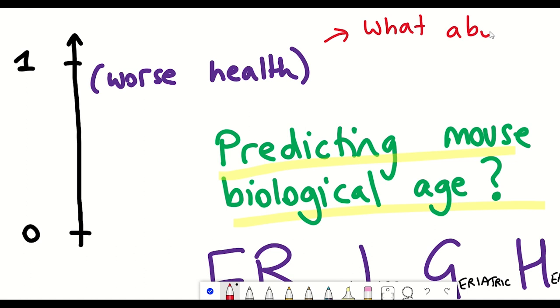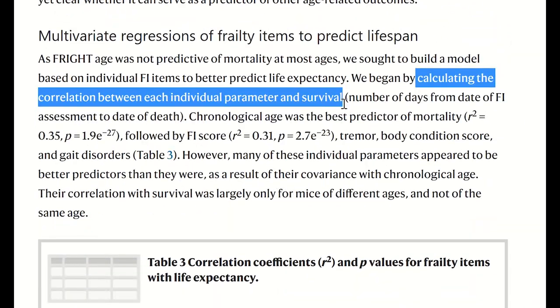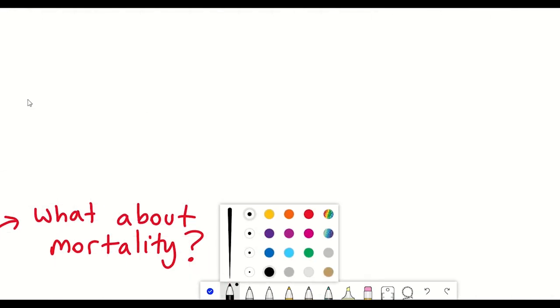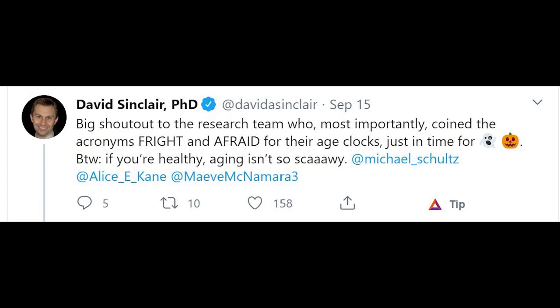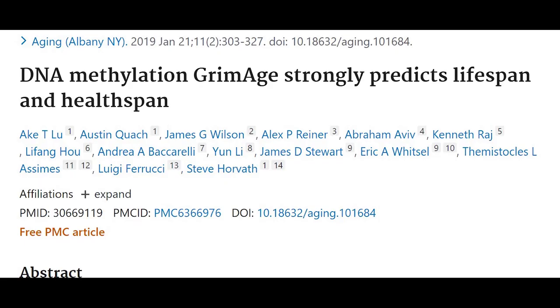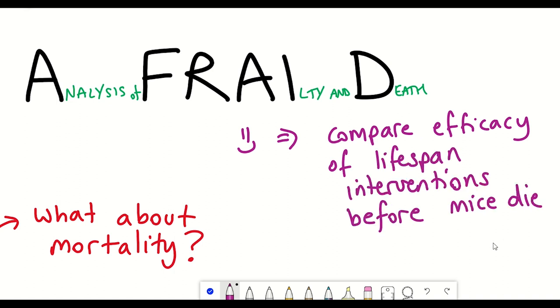So to develop a clock that can predict lifespan, the authors decided to look at the correlation between each of these individual frailty index items and survival. And their eventual outcome was the AFRAID clock, standing for analysis of frailty and death. And so clearly the lab are continuing the trend of naming these different clocks, such because aging and death are frightening to many people. And so it goes along with Grim Age clock that is used to look at DNA methylation patterns in humans and is named after the Grim Reaper as the clock allows one to predict lifespan and healthspan. And so the nice thing about the AFRAID clock is as it has the potential to compare lifespan effects of different interventions before the death of the different mice.